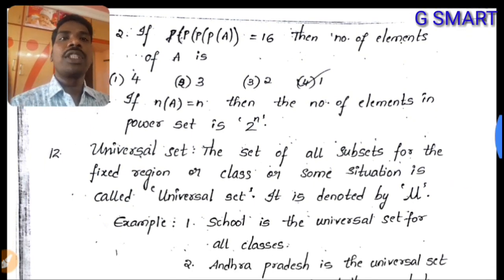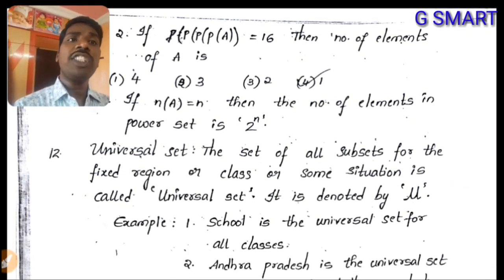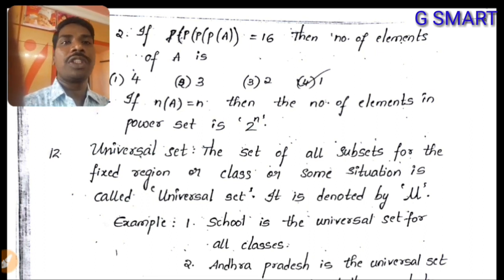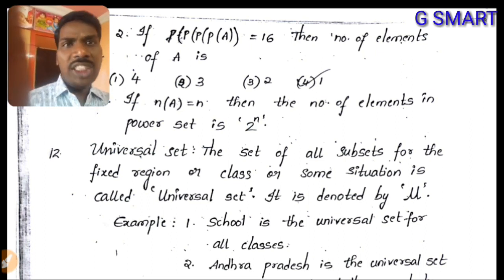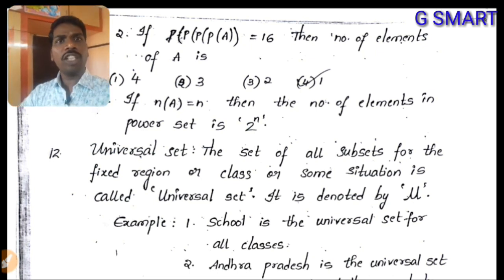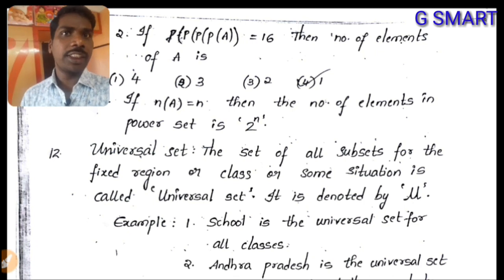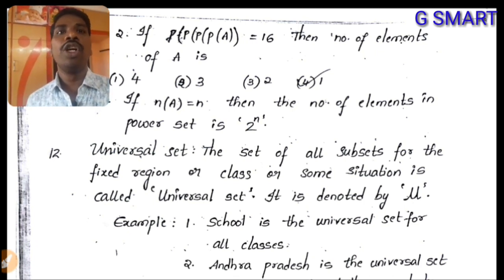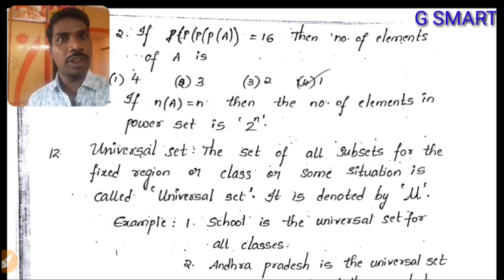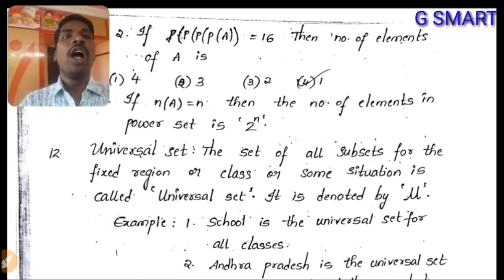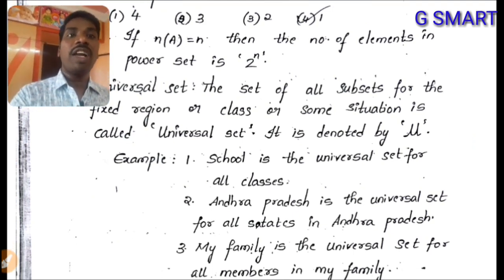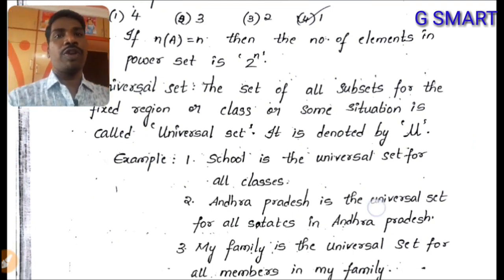Universal set: the set of all sets for a fixed region, class, or situation is called the universal set, denoted by μ (mu). Examples: a school is the universal set for all its classes; Andhra Pradesh is the universal set for all its districts; my family is the universal set for all family members.